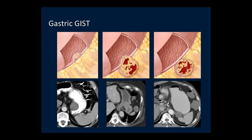Because GIST arise from the muscularis propria, they can grow toward or away from the gastric lumen. There are three basic patterns: a submucosal nodule, a lesion straddling the lumen with an exophytic component in the perigastric fat, and a predominantly exophytic GIST where the majority of the mass is outside the stomach. In all cases, the gastric wall will always have an area of small focal thickening indicating the origin of the tumor.